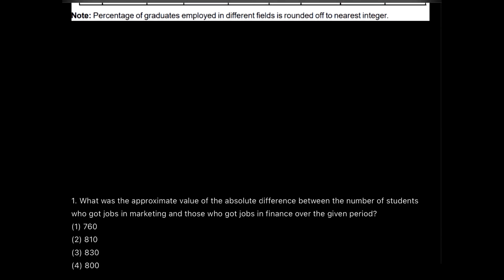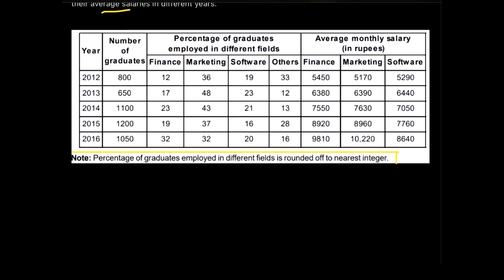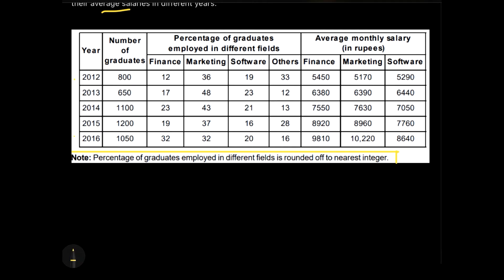The first question asks for the approximate value of the absolute difference. Please focus — they need an approximate value, and the note says that the percentage of graduates employed in different fields is rounded off to the nearest integer. So if we get any decimals we'll round off to the nearest integer. We have to find the absolute difference between the number of students — not percentage — who got jobs in marketing and those who got jobs in finance over the given period. The data covers 2012 till 2016, that means over all five years.